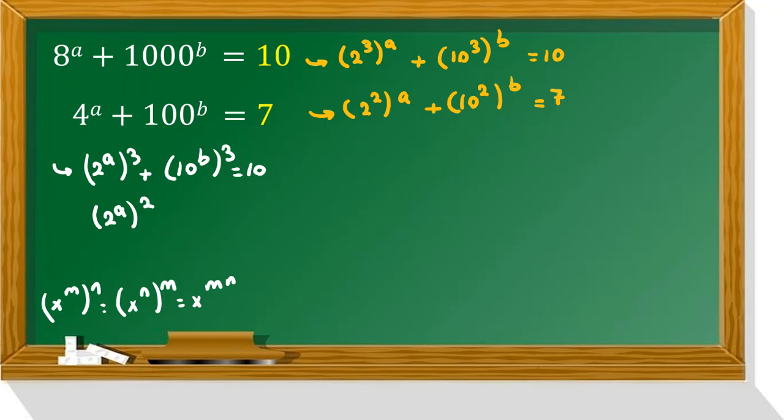2 to the a squared plus 10 to the b squared equal to 7. Now we use changing variable. We can set 2 to the a equal to x, 10 to the b equal to y.